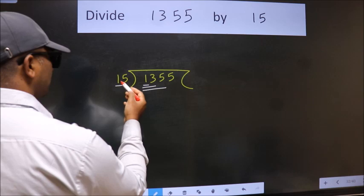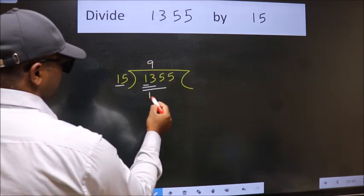When do we get 135 in the 15 table? 15 nines, 135.